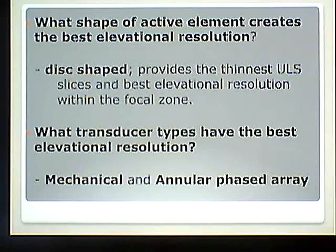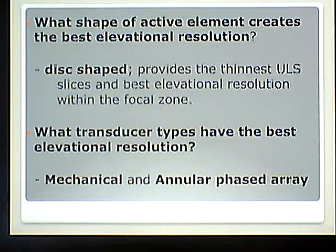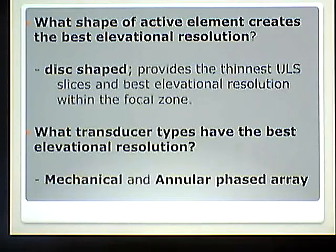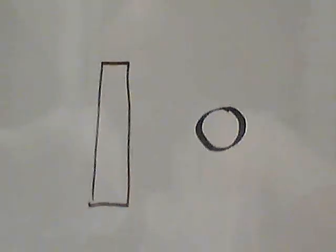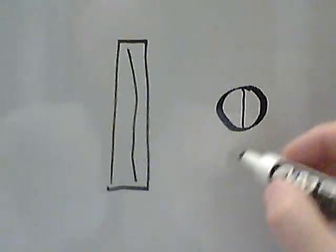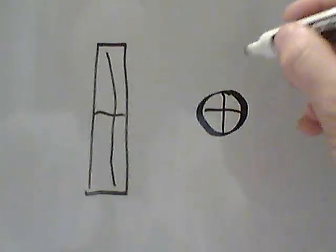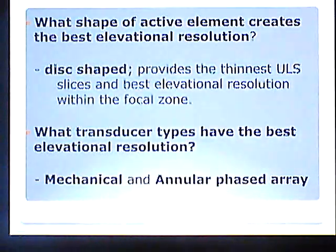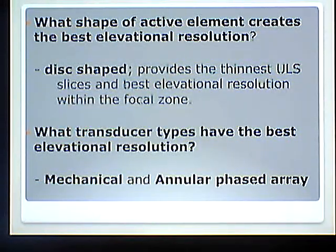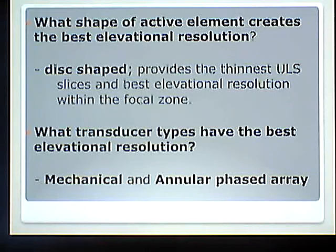What shape of active element creates the best elevational resolution? Disc-shaped, because we want the beam to be not only narrow but thin as well. A large rectangular-shaped crystal is taller than a small disc-shaped crystal, whereas a disc gives us the best of both worlds. Disc-shaped elements provide the thinnest ultrasound slices and best elevation resolution within the focal zone. Transducer types with the best elevation resolution are mechanical and annular.